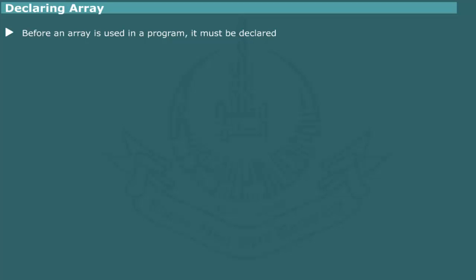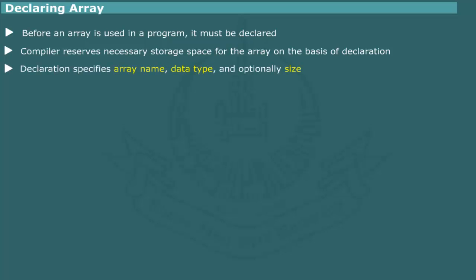Declaring array. Before an array structure is used in a program, it must be formally declared. This is required by the compiler in order to reserve necessary storage space for the array. The rules for array declaration differ with programming languages. In general, the declaration specifies array name, size and data type.